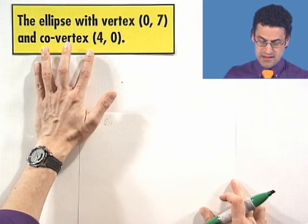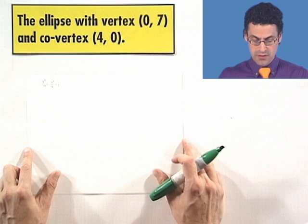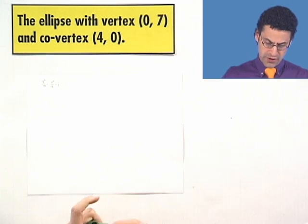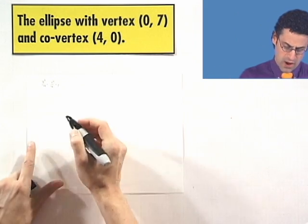Let's try another example. How about this one? I'm going to look at the ellipse having a vertex at 0, 7 and a co-vertex at 4, 0. Well now notice that the vertex is along the y-axis.